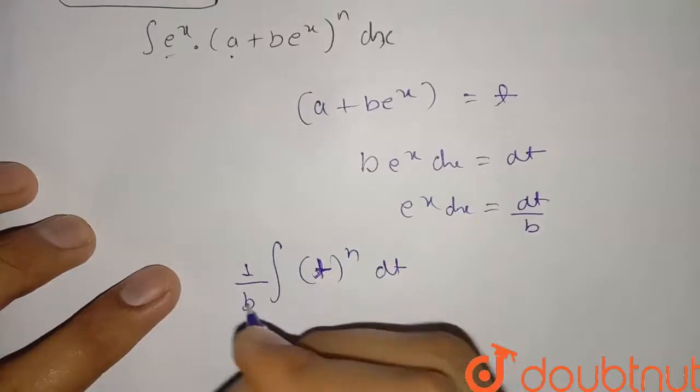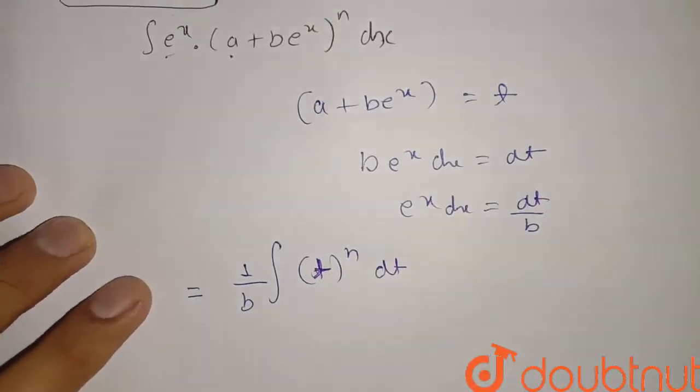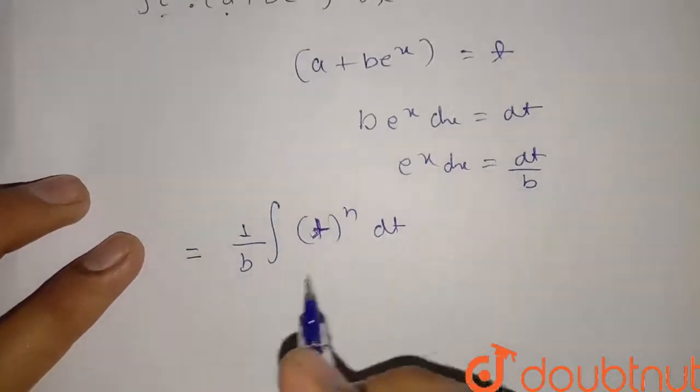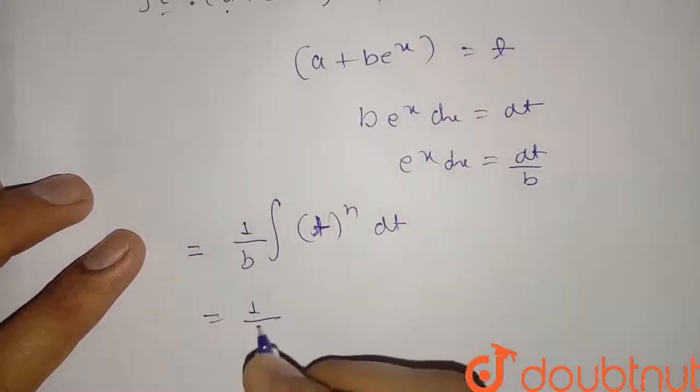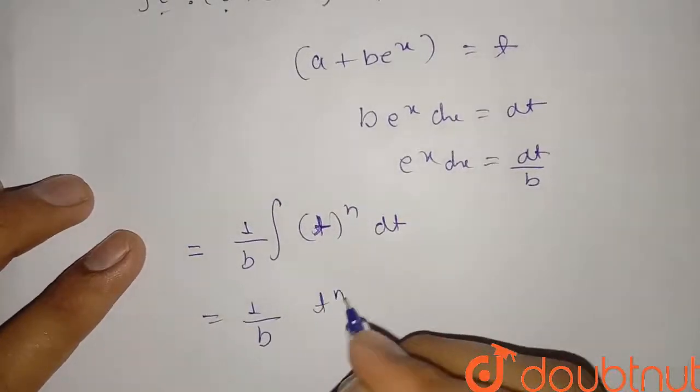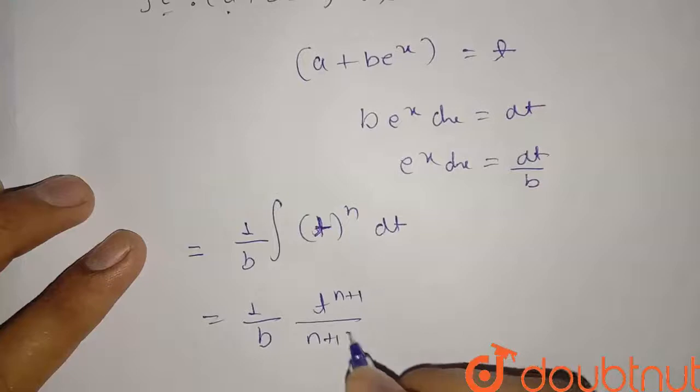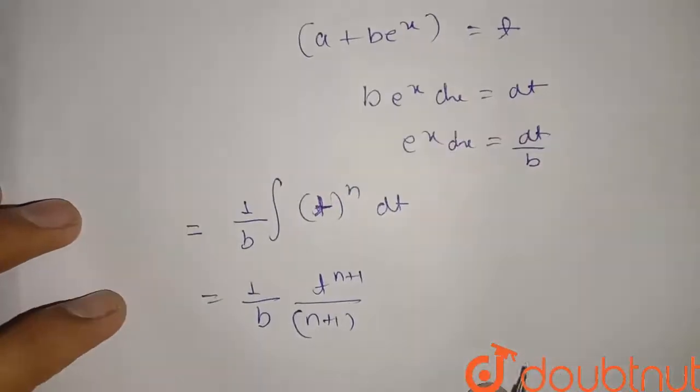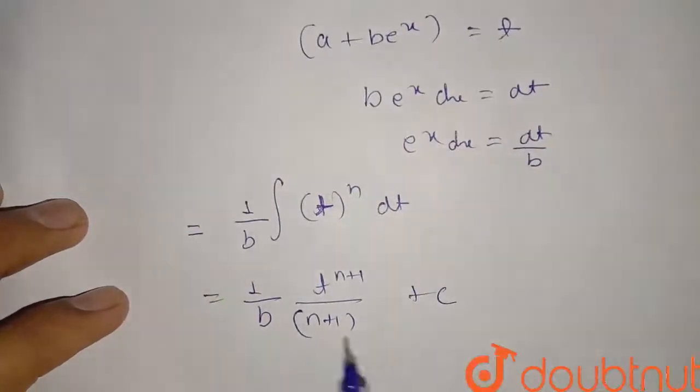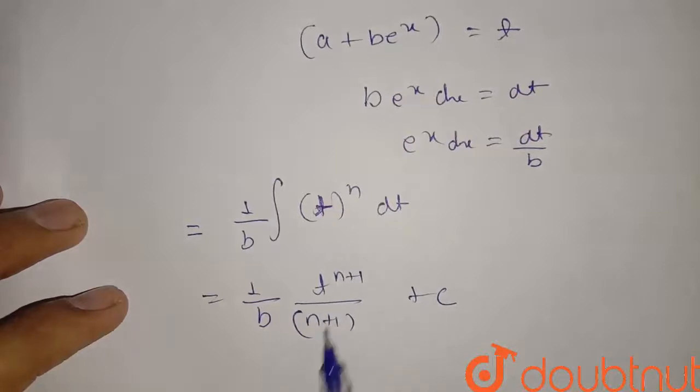So I am taking this b outside, 1 upon b. Now integration of t raised to n will be simple, our normal integration t raised to n plus 1 upon n plus 1, plus c.